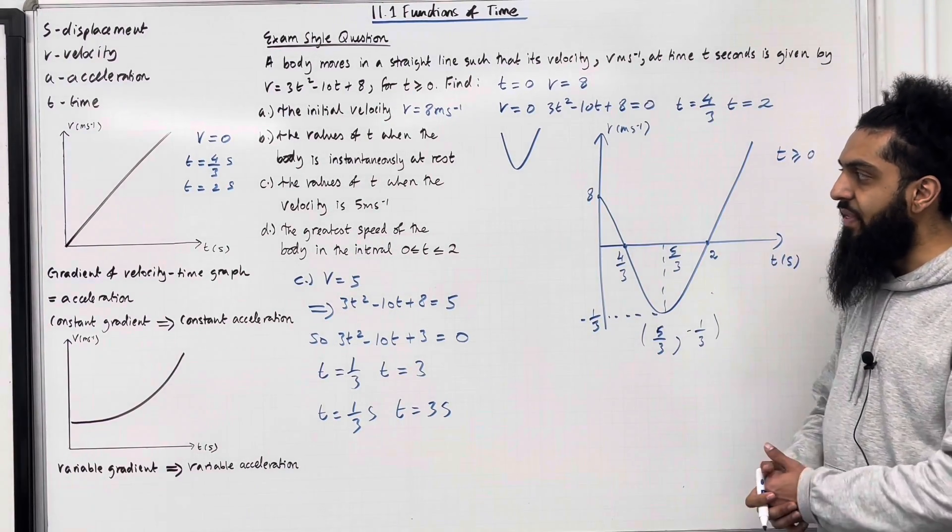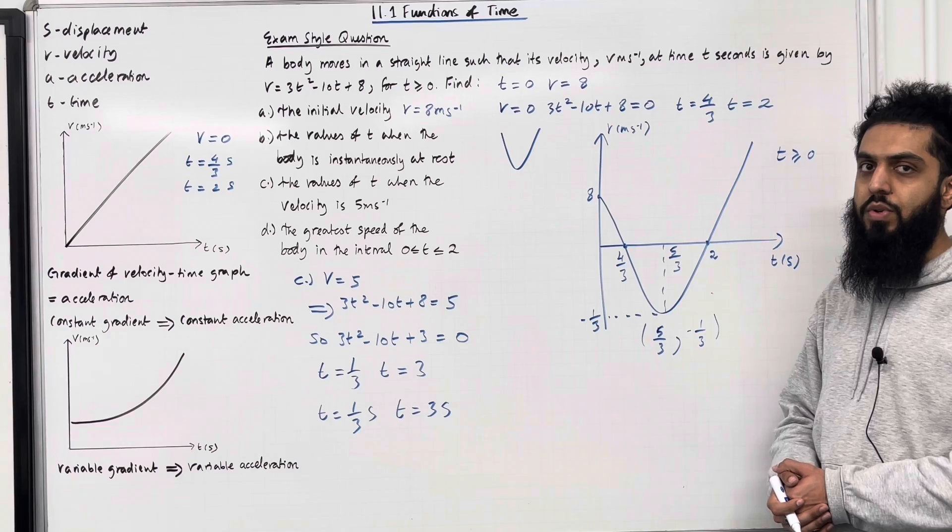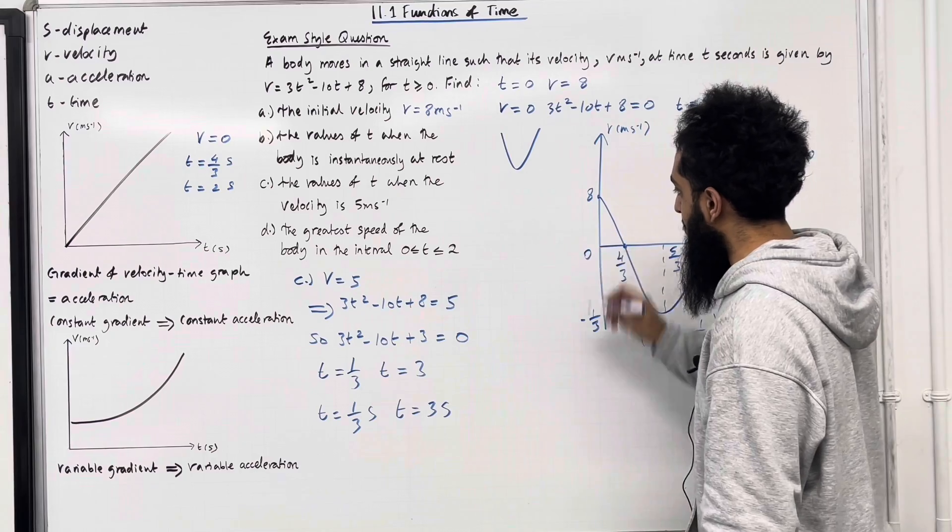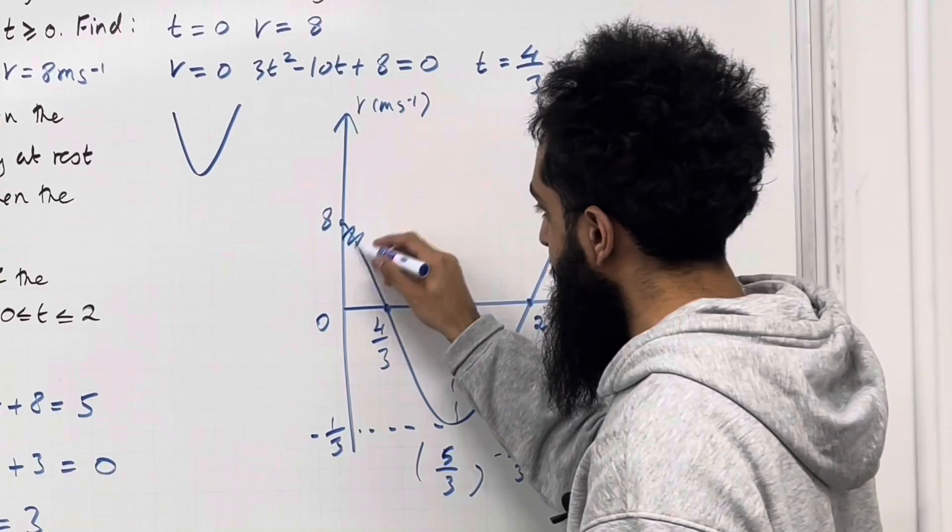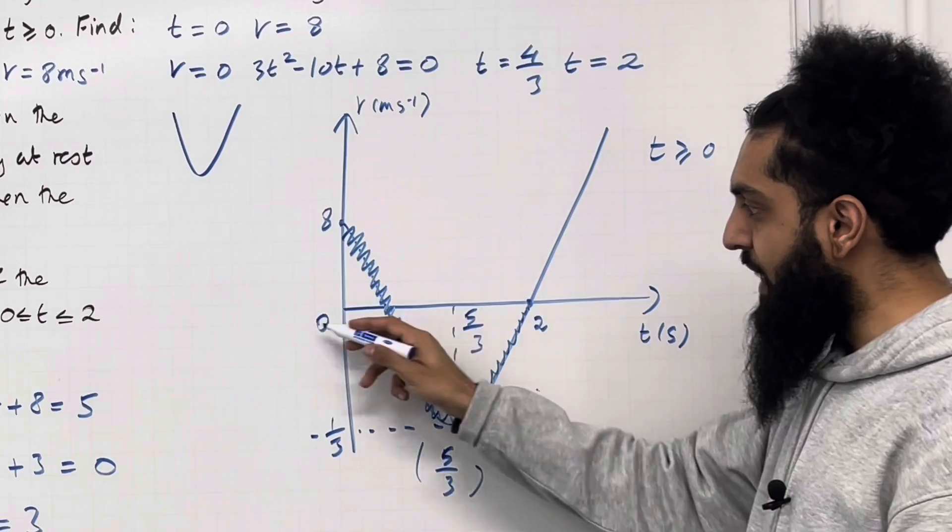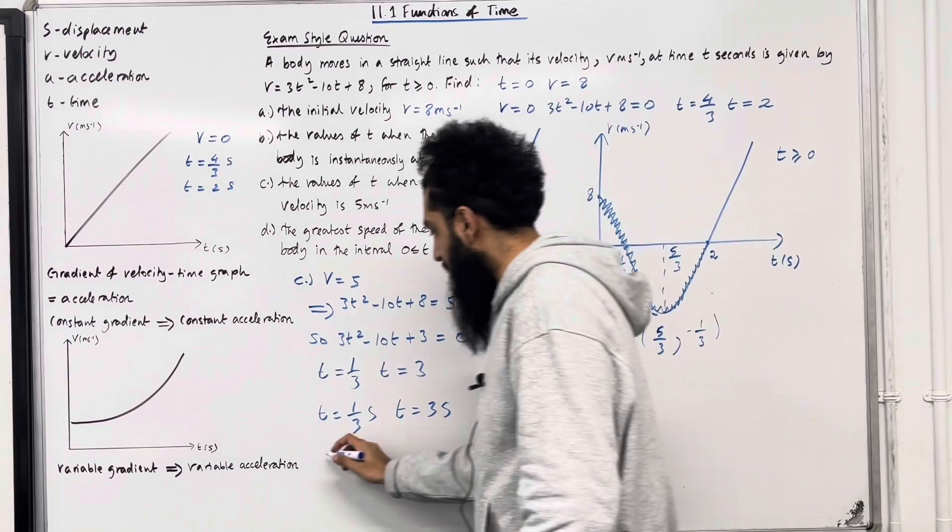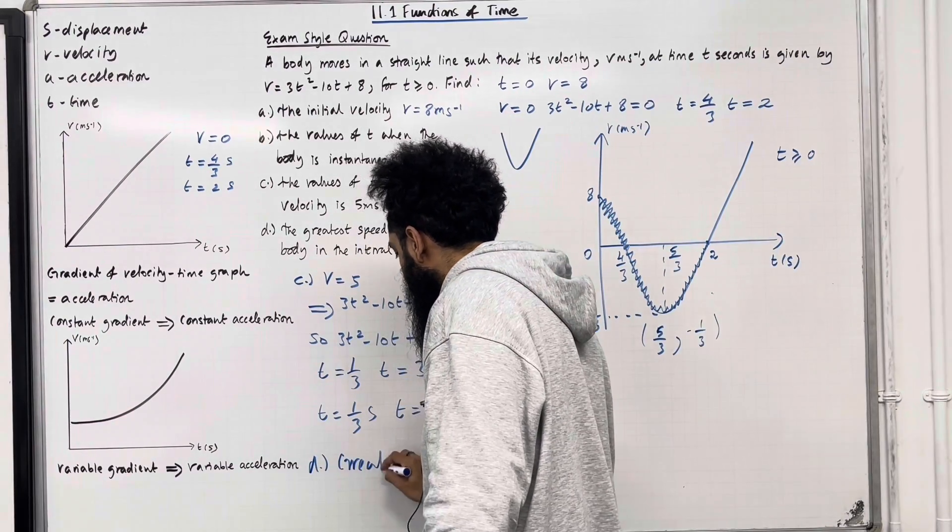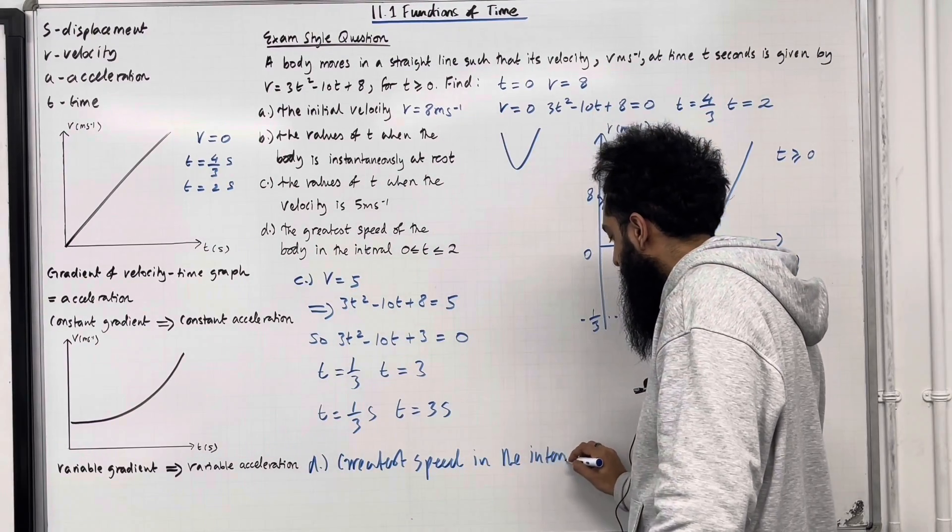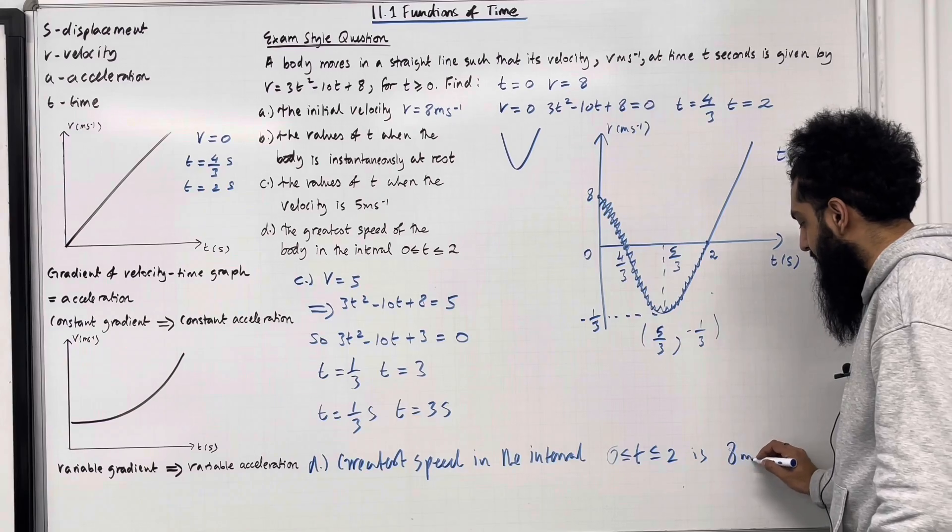Part D of the question, we want to find the greatest speed of the body in the interval t is greater than or equal to 0 but less than or equal to 2. Okay, so I'm going to sketch the part of the curve that represents this interval. So over here, we've got 0. So we're going from 0 to 2. So it's this part of the curve, all the way up until that point there. So in that interval, we can see that the greatest speed is 8 meters per second. So for part D of the question, we have that greatest speed in the interval t is greater than or equal to 0 but less than or equal to 2 is 8 meters per second.